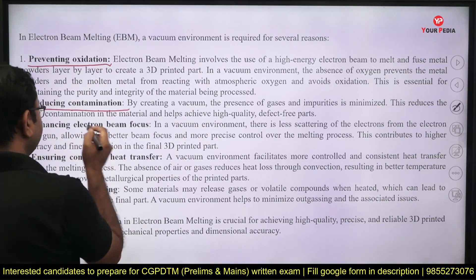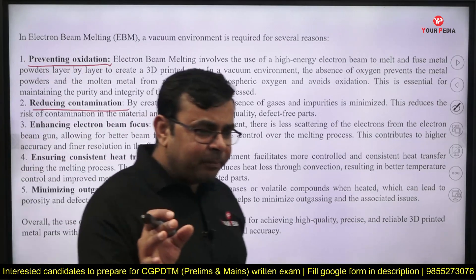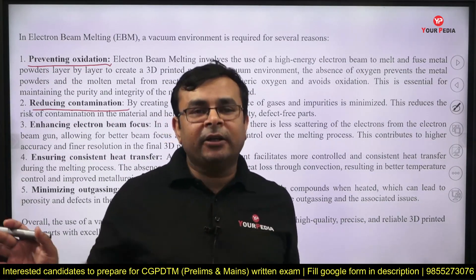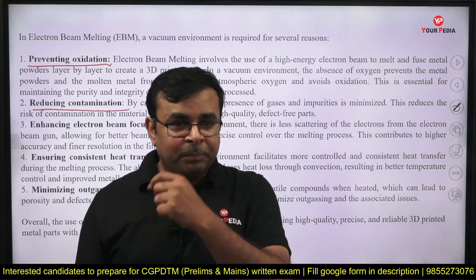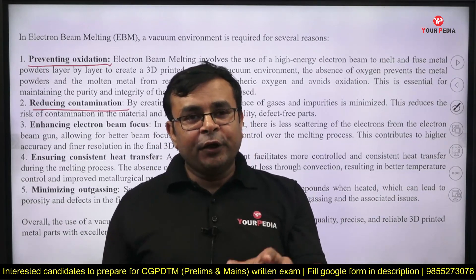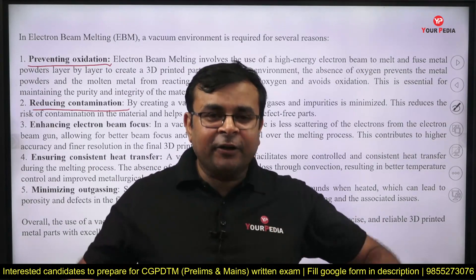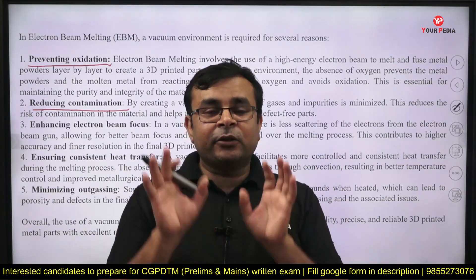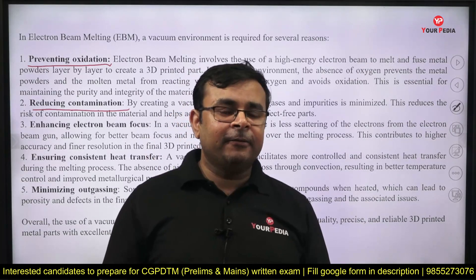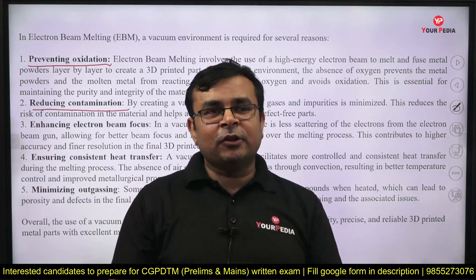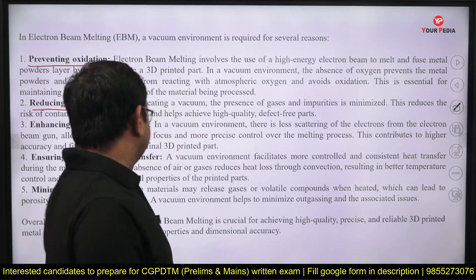Next is enhancing electron beam focus. Electron beams are generally scattered if they encounter a medium. So to prevent that scattering effect, you need to provide a vacuum chamber. Even inside the vacuum chamber, the inner layer is coated with some reflecting material so that all the reflected beams get directed back and concentrated on a particular location.